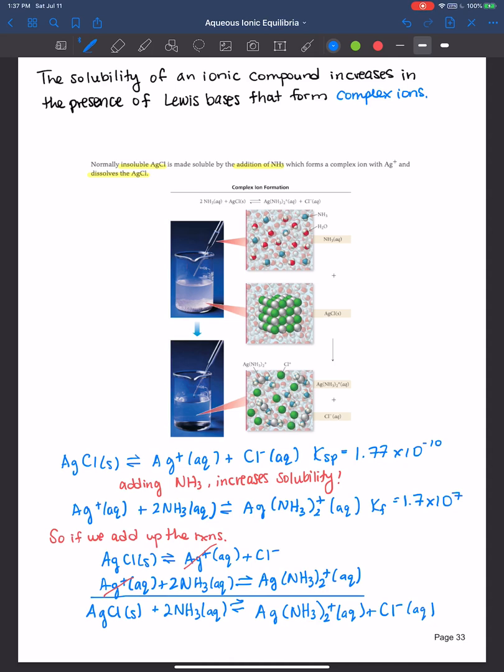And when you add up reactions, what do you do to their equilibrium constants? Excellent, you multiply them. So Ksp times Kf is equal to 3 times 10 to the negative third, and that's equal to the equilibrium constant overall.